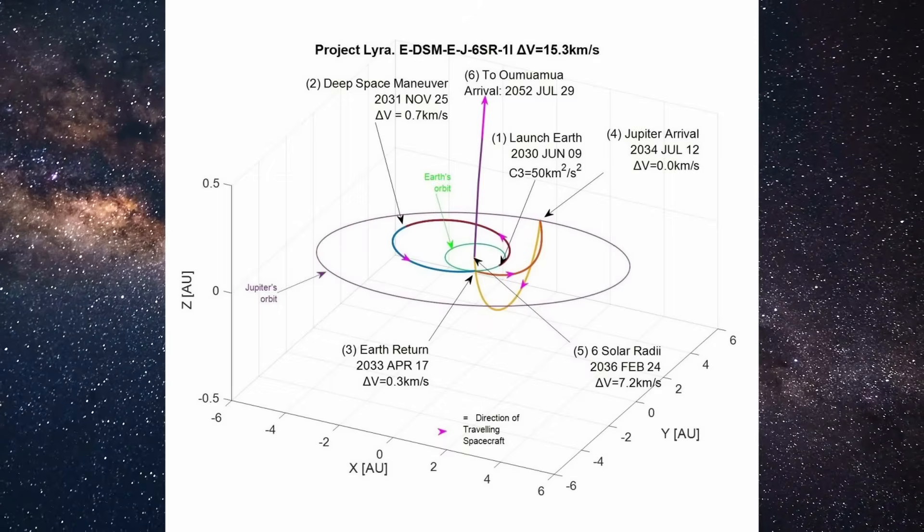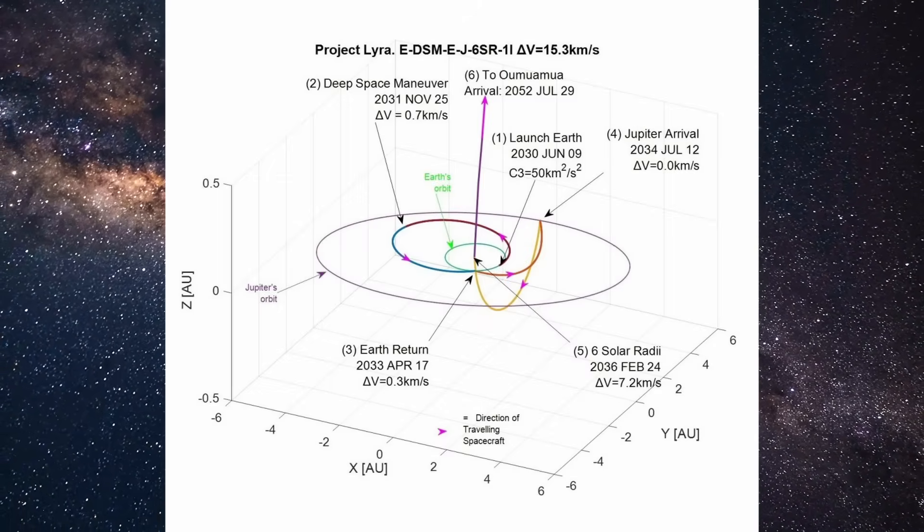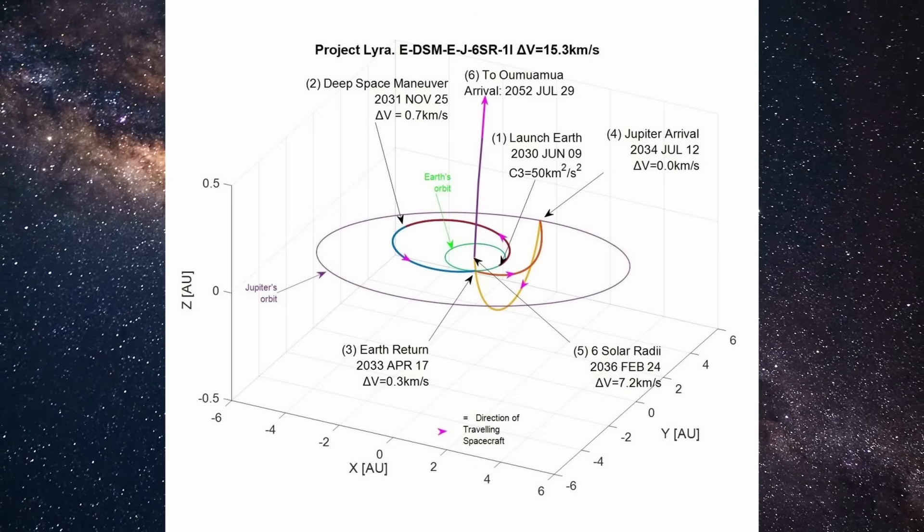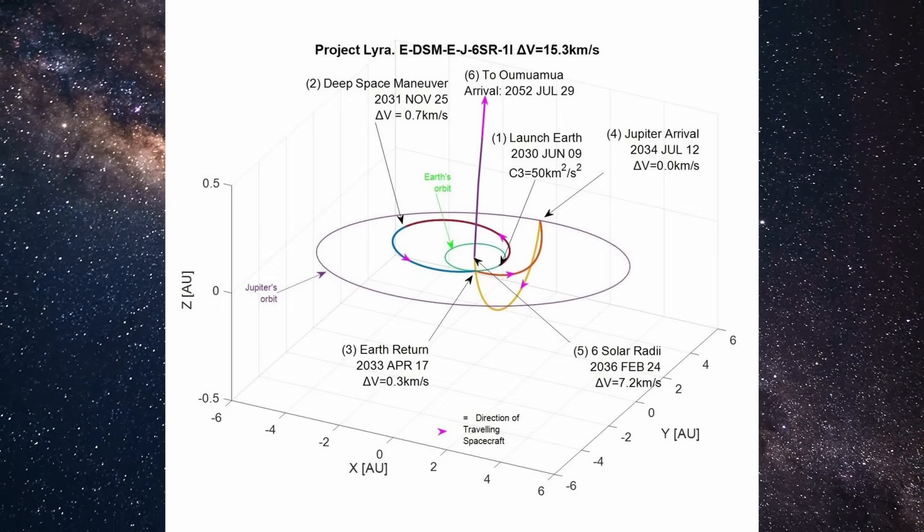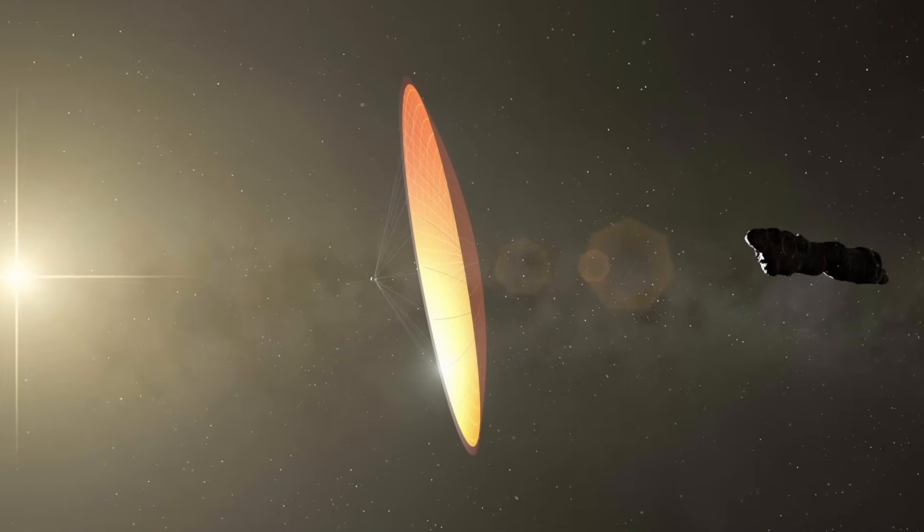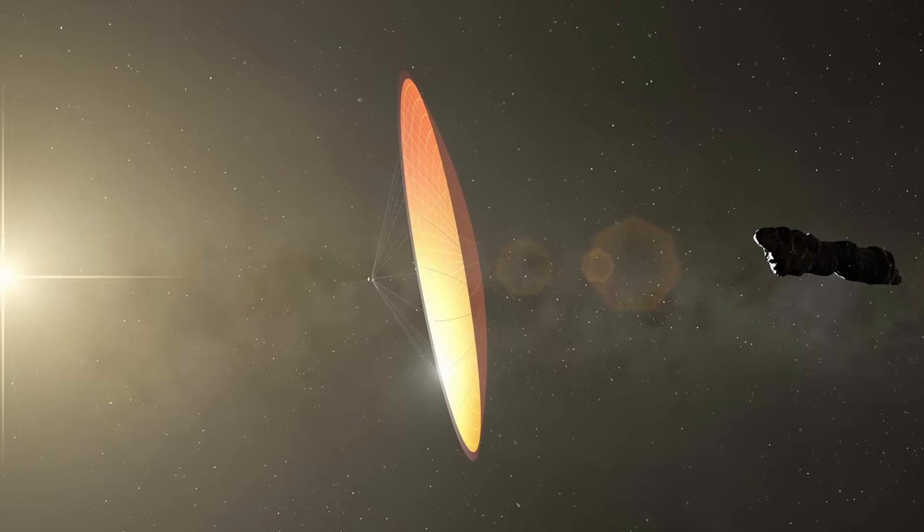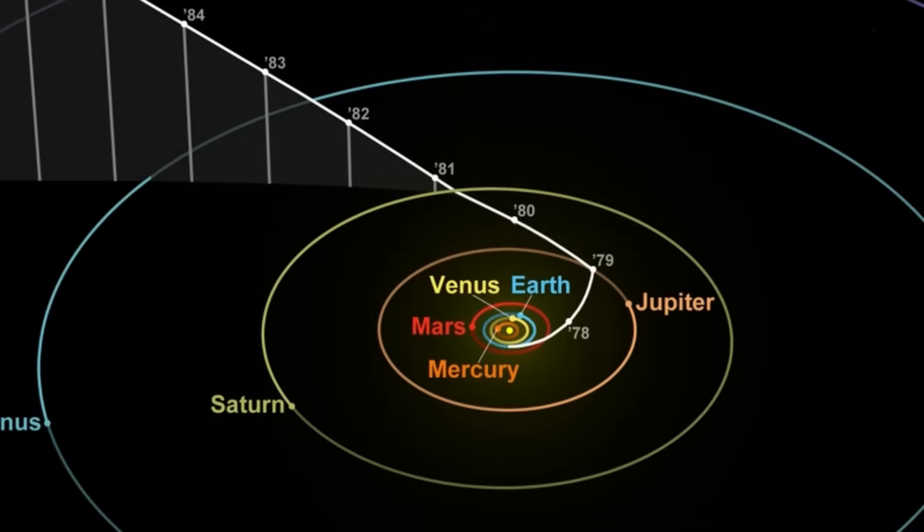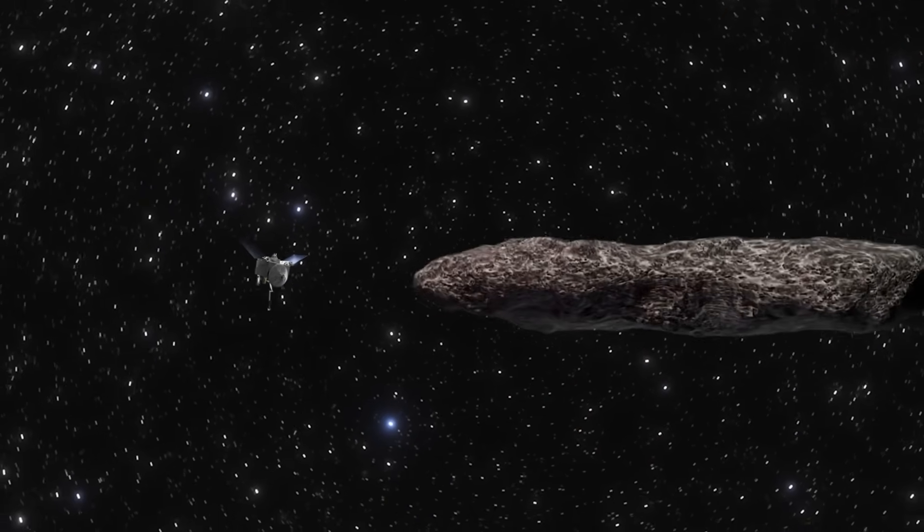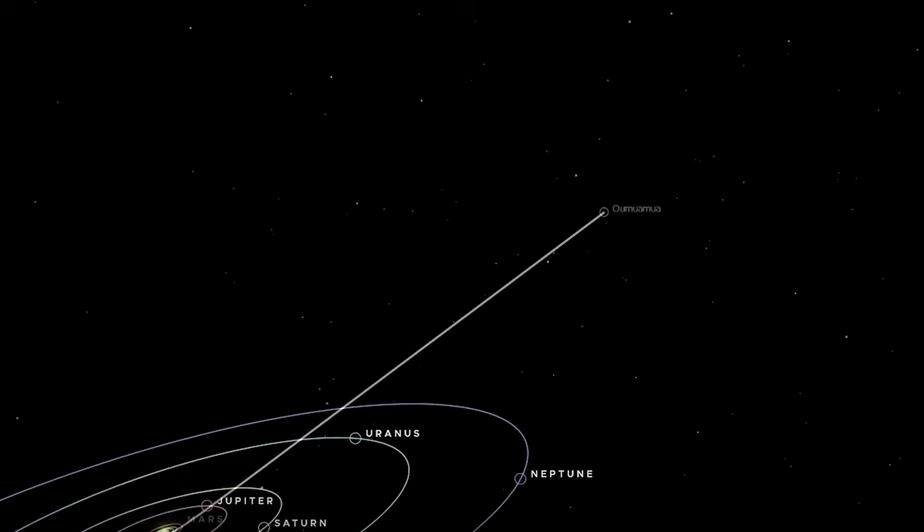To do that, scientists are considering two possible trajectories. This plan involves launching a spacecraft from Earth to Jupiter, then using Jupiter's gravity to fall toward the Sun. At its closest point, just before the Sun's heat melts it to pieces, the spacecraft fires its engines in a maneuver called the Solar Oberth Maneuver. This gives it a massive boost in speed, catapulting it out of the solar system at over 70 kilometers per second. That's fast enough to catch Aumuamua.